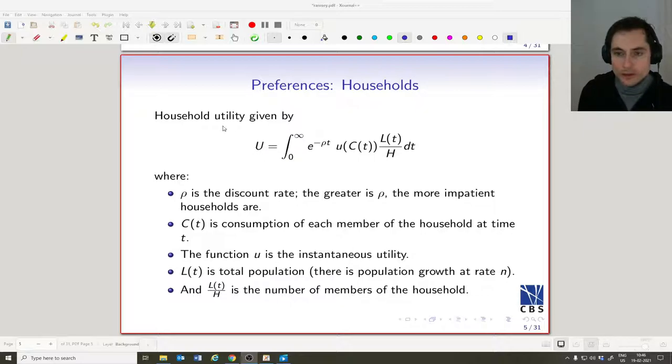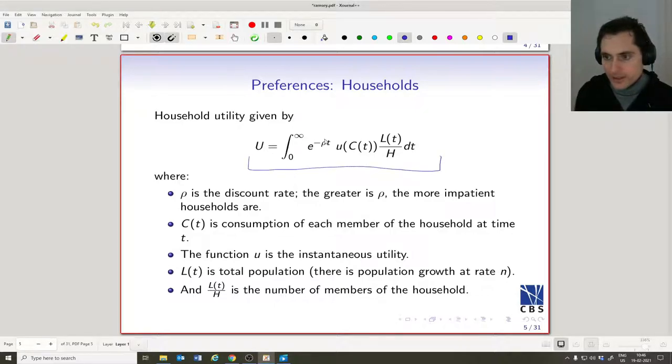So we're going to assume that household utility, again household utility, is given by the following relationship. So there's lots of different parts here, but they're the kind of parts you've seen in other economics models. So we have a utility function which depends only on consumption, standard economics assumption, for better or worse. And then we have the number of people in the household.